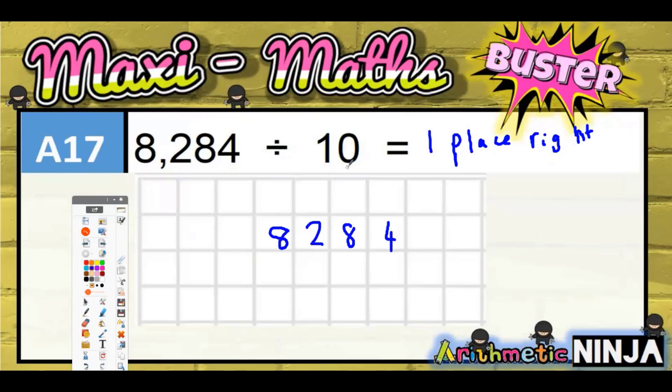But because it's 10, there's just a single zero there, it's one place to the right. So what's really useful to you here is your decimal point. The decimal point is your friend.